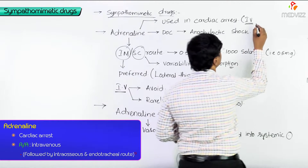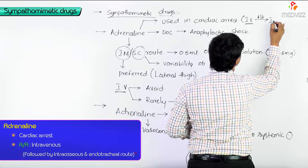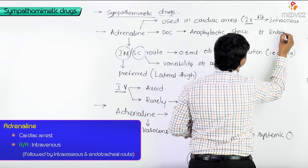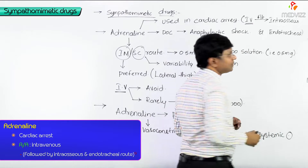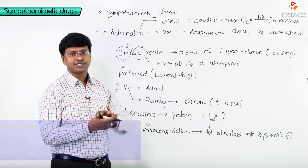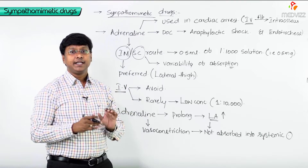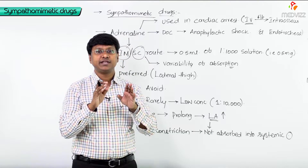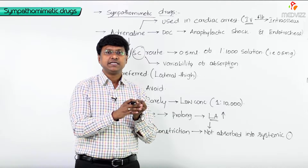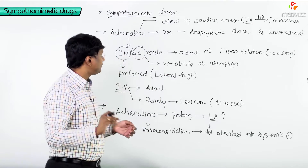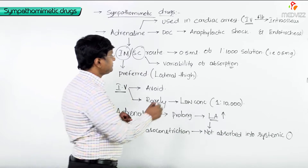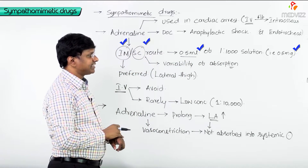Following the intravenous route, adrenaline can also be given by the intraosseous route and the endotracheal route in cardiac arrest. To summarize: adrenaline is the drug of choice for anaphylactic shock, given at 0.5 ml of 1:1000 solution (0.5 mg) via IM or SC route, with IM preferred.